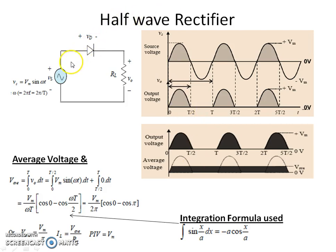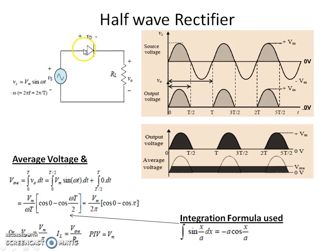This is the half-wave rectifier, where a sine wave input is applied and one diode is used with a load. The input has time period T; the positive half-cycle has duration T/2 and the negative half-cycle has duration T/2. During the positive half-cycle the diode becomes forward biased and we get an output. During the negative half-cycle the diode becomes reverse biased and we get no output.